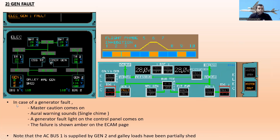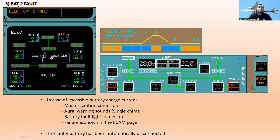The next one is generator fault. In case of generator fault, master caution comes on with a single chime oral warning, and the generator fault light on the control panel comes on. The failure is shown amber on the ECAM page — ELEC generator one fault is shown. Note that AC bus one is supplied by generator two, and galley loads have been partially shed. You can see AC bus one is now supplied from generator two, and the galley becomes shed.